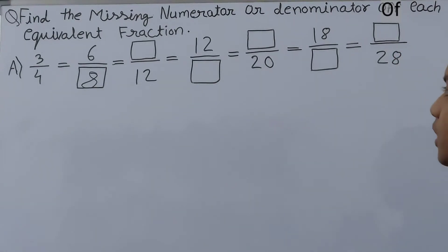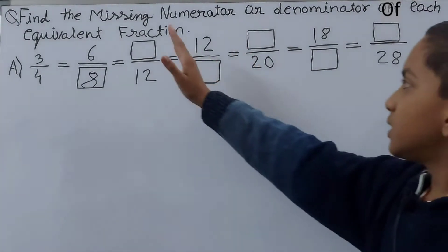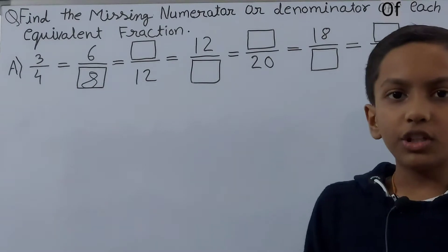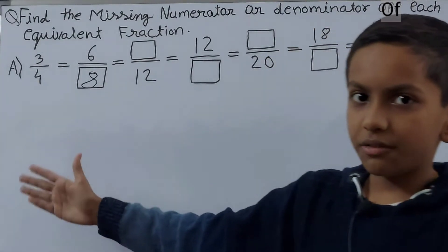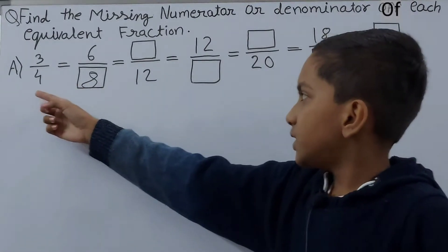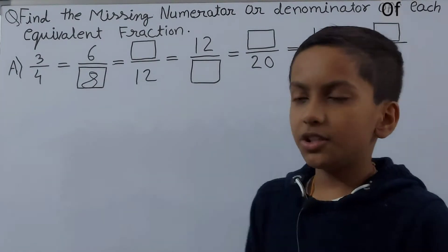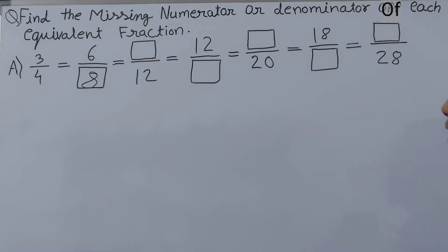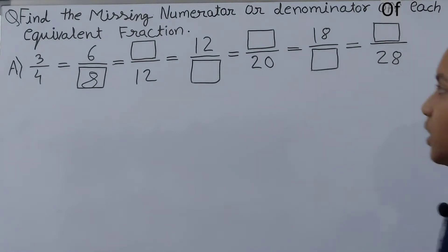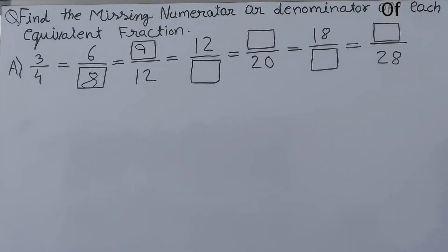Now we have 6/8 = □/12. Here the box is in the numerator and the denominator is 12. We look at the relation between the denominators: 4 times 3 is 12. So we multiply the numerator 3 by 3 as well: 3 times 3 is 9. So 9 goes in the box.